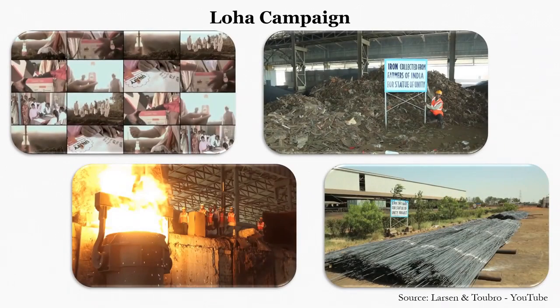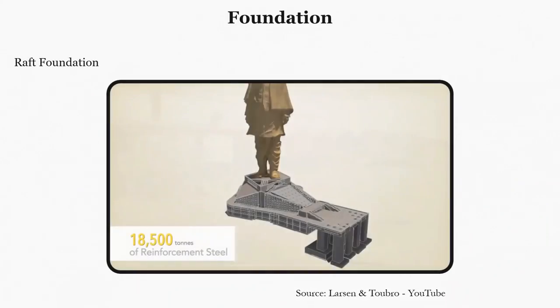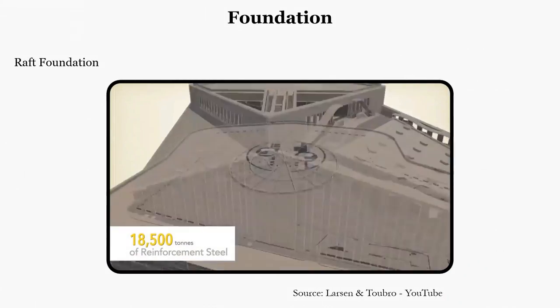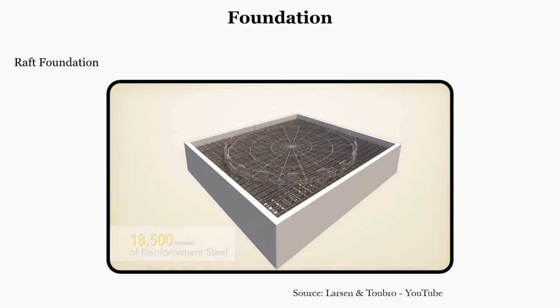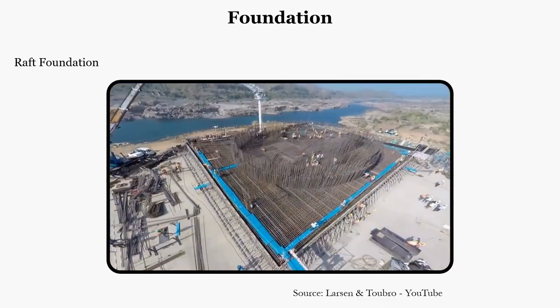Sardar Patel was a leader of farmers. As part of the Loha campaign, iron tools were collected from farmers across India, with the intent of melting them and converting them into rebar for the statue's foundation. Thus, the people — and in particular the farmers of India — are an integral part of the statue's structure. The iron collected from the Loha campaign was used as rebar for the mat foundation of the statue.